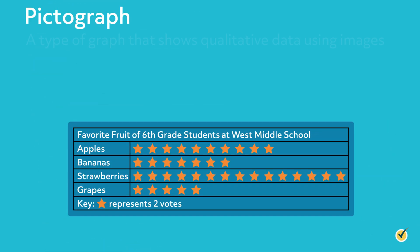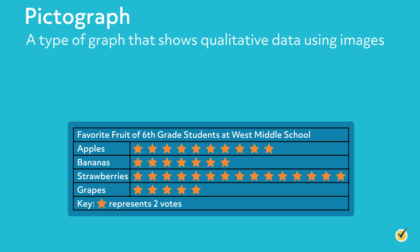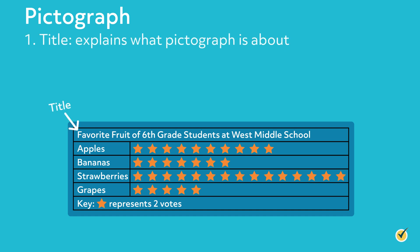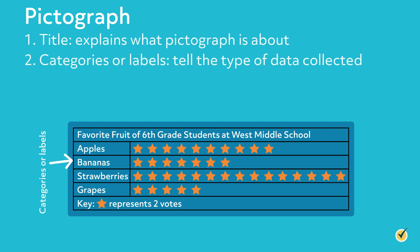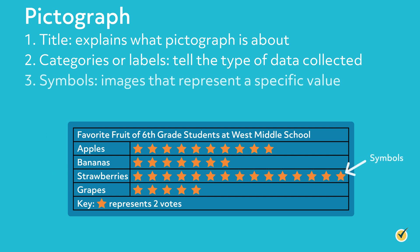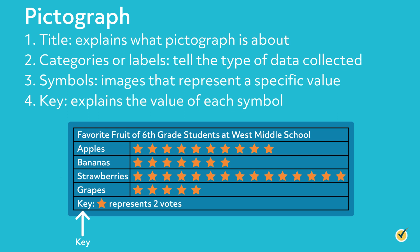A pictograph is a type of graph that shows qualitative data using images. All pictographs contain the following components: a title, which explains what the pictograph is about; categories or labels, which tell the type of data collected; symbols, which are images that represent a specific value; and a key, which explains the value of each symbol.